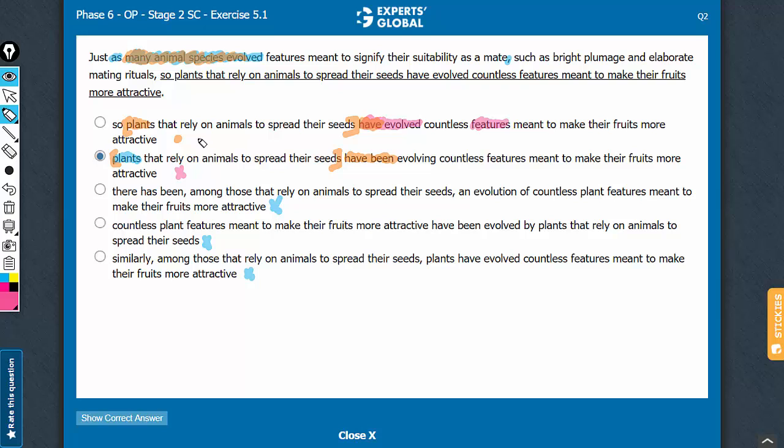So between A and B, A is a better answer choice. Let's confirm it once. Just as many animal species evolved features meant to signify something, so plants. See, just A, so B is an idiomatic way of comparing clauses. So plants that rely on something have evolved countless features meant to make them something. Answer choice A makes sense. Although it is not a perfect answer choice, it is the best among the five answer choices.